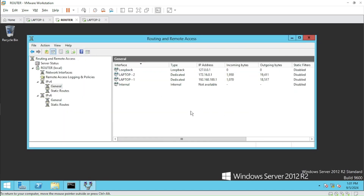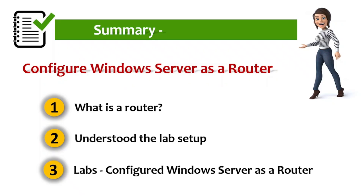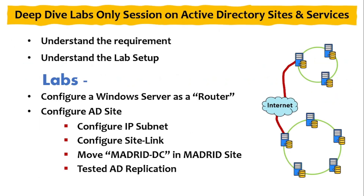In this lab we have successfully configured a Windows Server as a router. To summarize: in our upcoming session we will be configuring Active Directory Sites and Services using this same router, and we will configure IP subnets, site links, and test Active Directory replication.